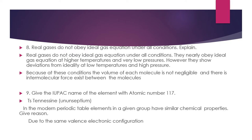In the modern periodic table, elements in a given group have similar chemical properties because of their similar electronic configuration. However, there is variation in the strength of properties within a group as we move down, due to increasing atomic size and decreasing ionization energy.